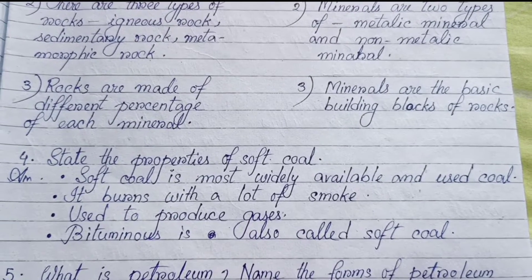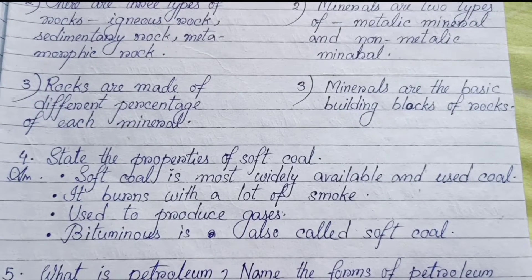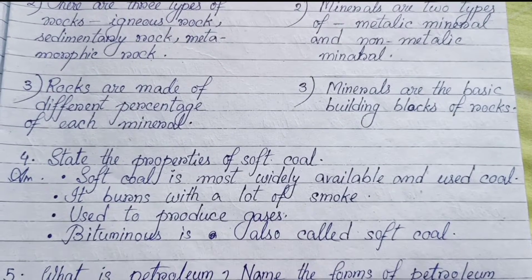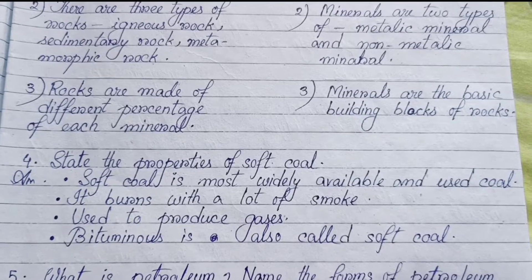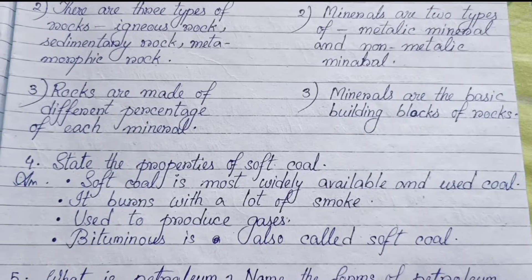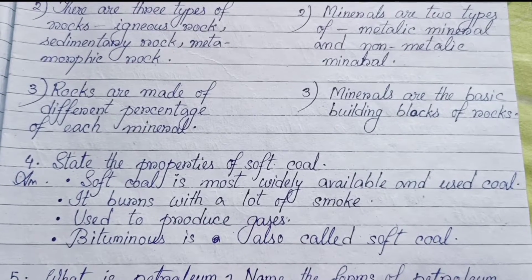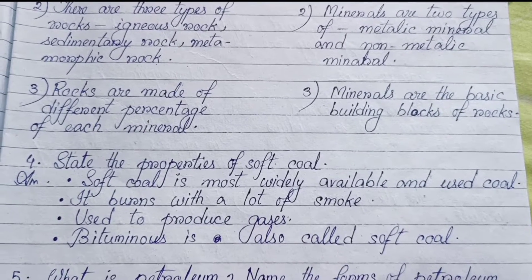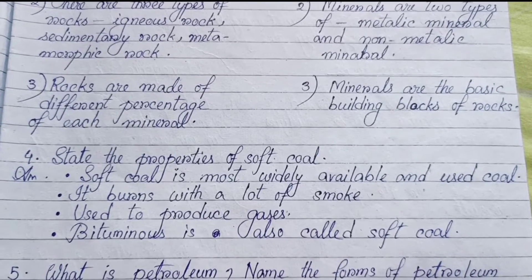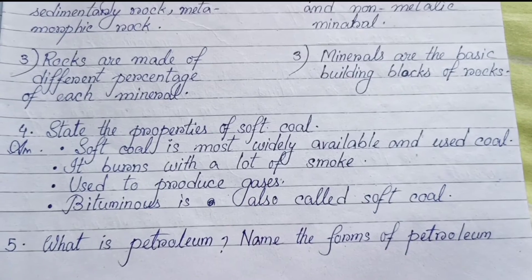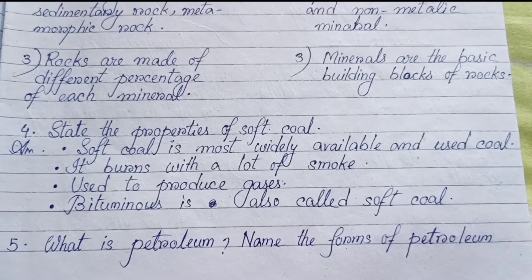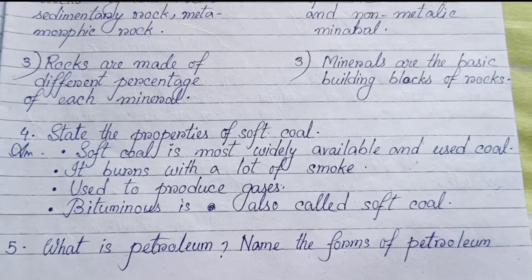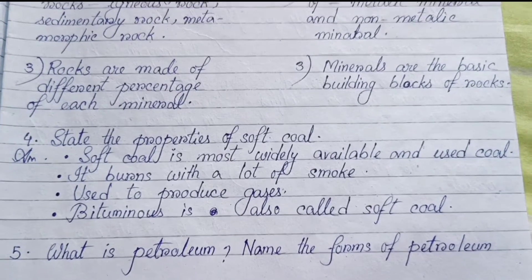Number four: State the properties of soft coal. Soft coal (Bituminous) is the most widely available and used coal. It burns with a lot of smoke and is used to produce gases. Bituminous is also called soft coal.